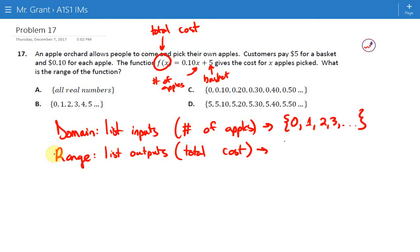The corresponding range, if you pick 0 apples, imagine plugging 0 into this equation, we would spend $5. If you picked 1 apple, that'd be $5 plus 10 cents. 2 apples, $5.20. 3 apples, $5.30, and so on and so forth.